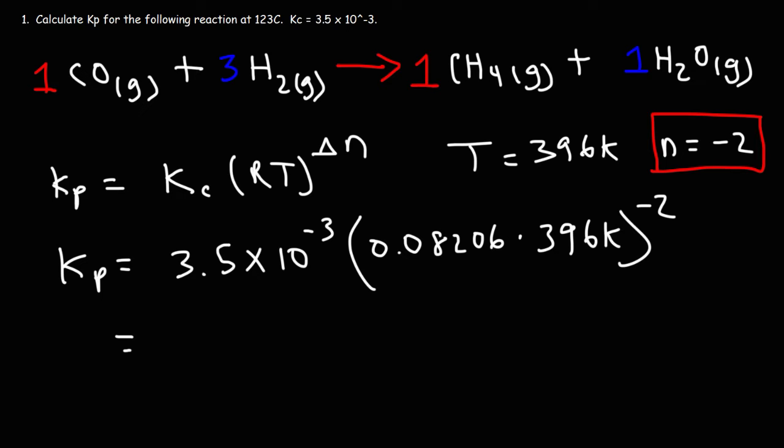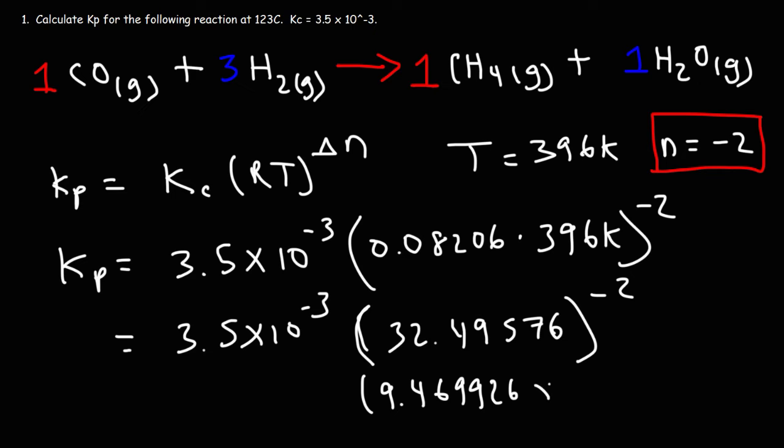So let's take this one step at a time. 0.08206 times 396, that's 32.49576. And we're going to raise that to negative 2. So once you raise it to the negative second power, you should get 9.4699 times 10 to the minus 4. So if we take that number, multiply it by 3.5 times 10 to the minus 3, this gives us the equilibrium constant for partial pressure, which is 3.314 times 10 to the minus 6. So this is our Kp value.